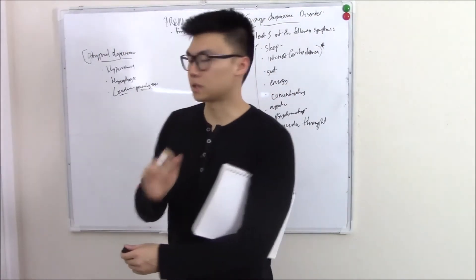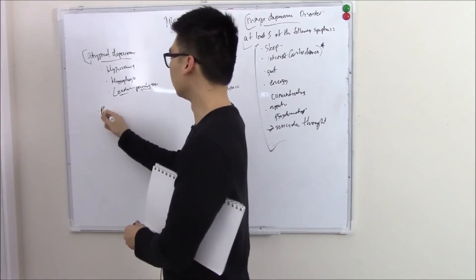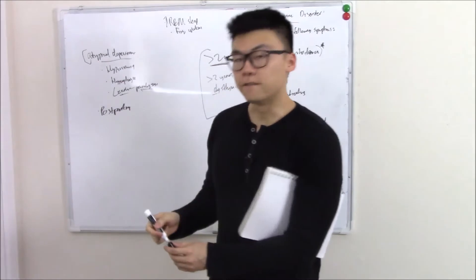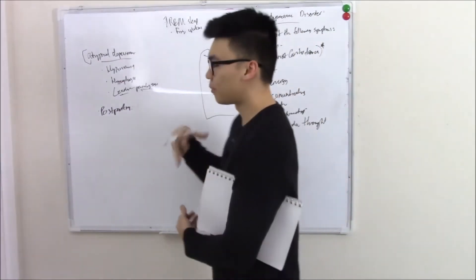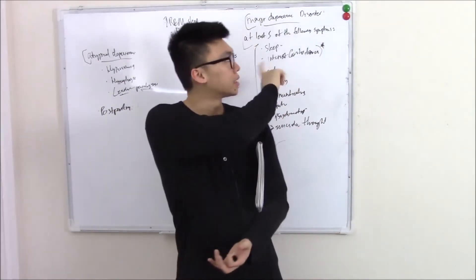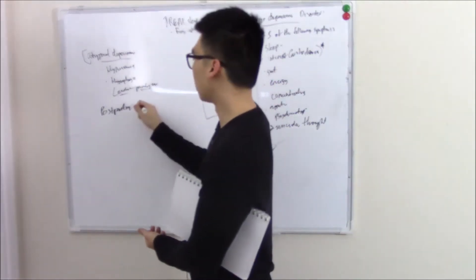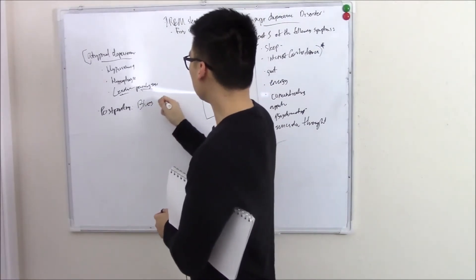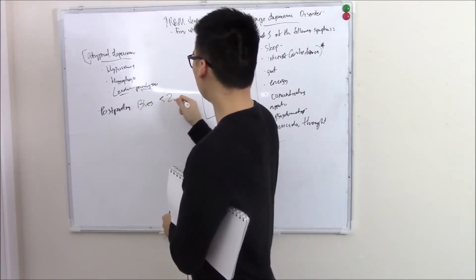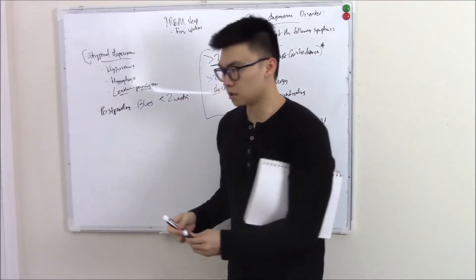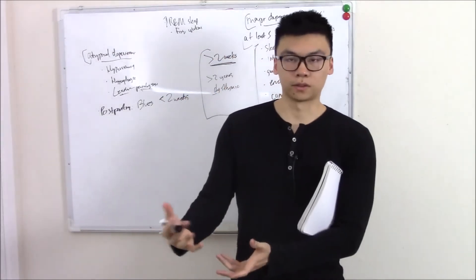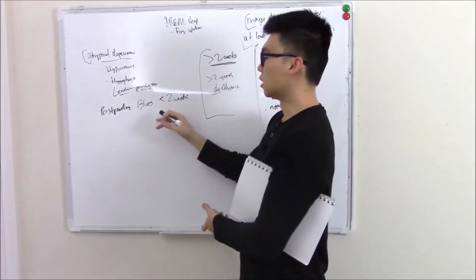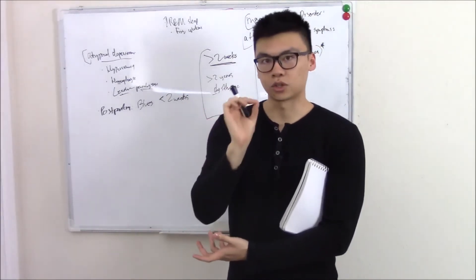Another time you commonly see depressed mood is postpartum — after delivering a baby, sometimes even during pregnancy. You can have a mild depressed state that doesn't quite meet the criteria for depression, so we call it postpartum blues. Very common. It usually resolves within two weeks. Since it doesn't meet the criteria for depression, you don't give antidepressants — you just reassure them that it's very normal and reassess in two weeks to make sure it goes away.